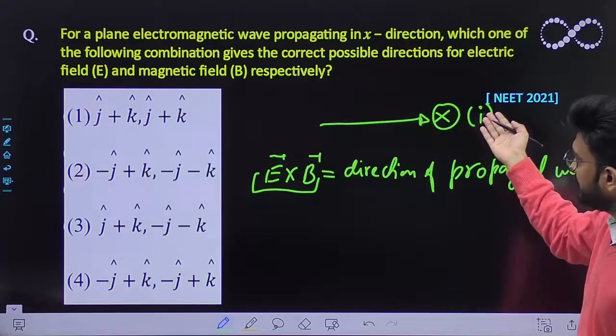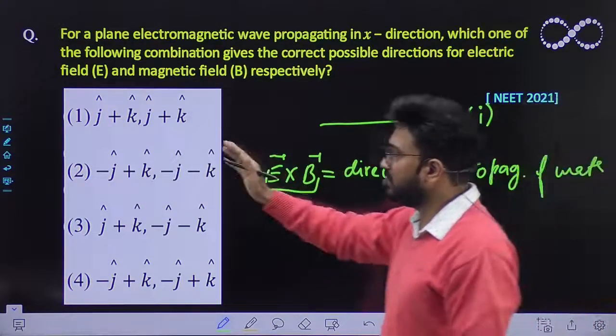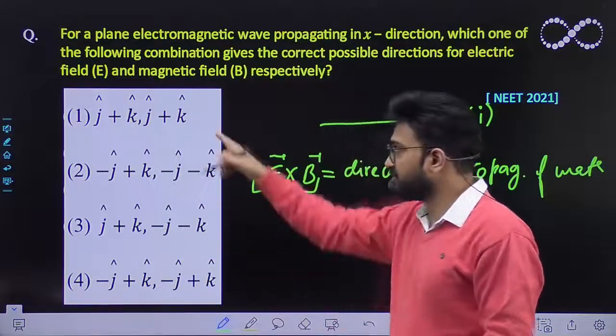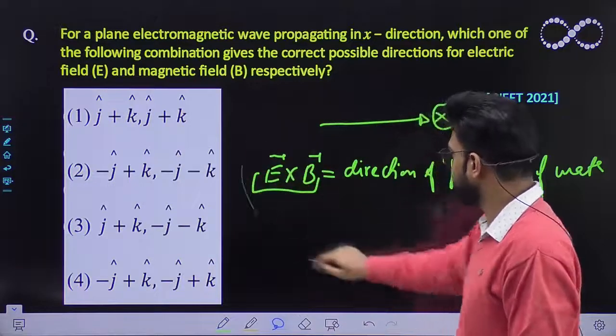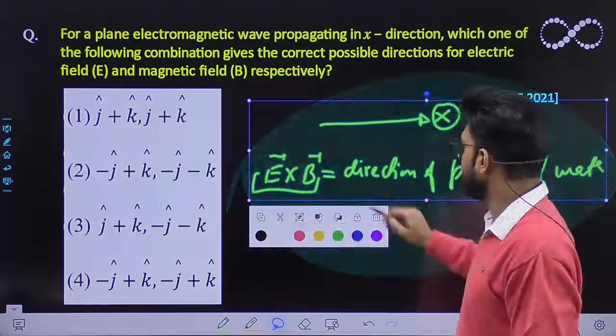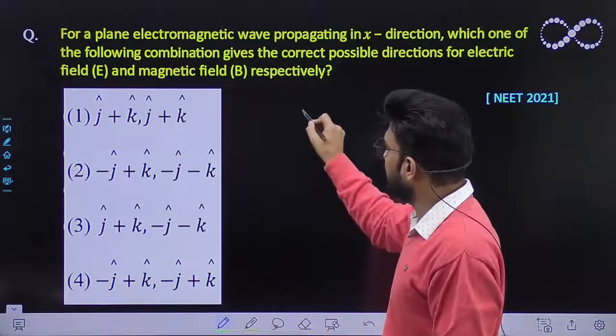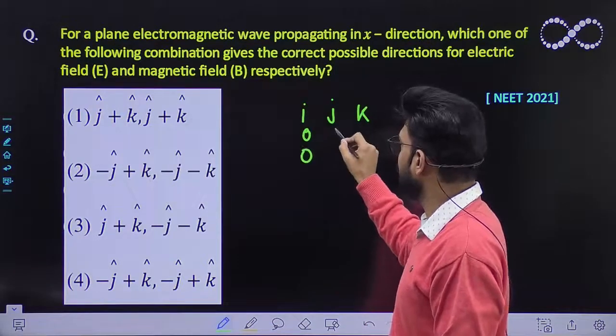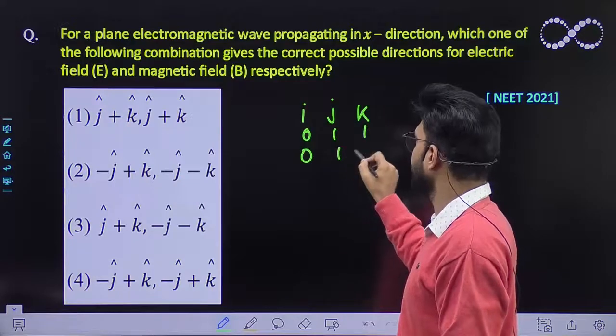You must get the value of i-cap after doing the cross product of these two. First of all we will do the cross product of the first term. Let us see: i j k, 0 0 1, 1 1 1.